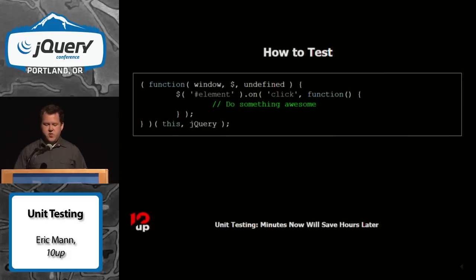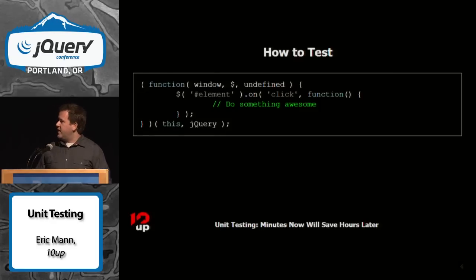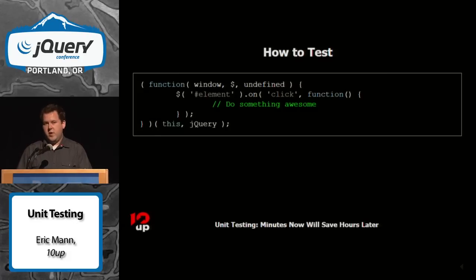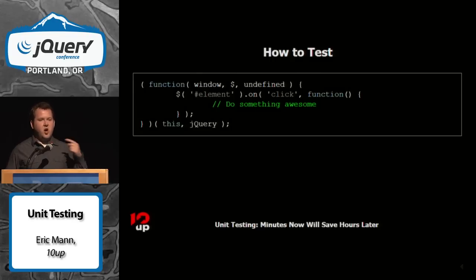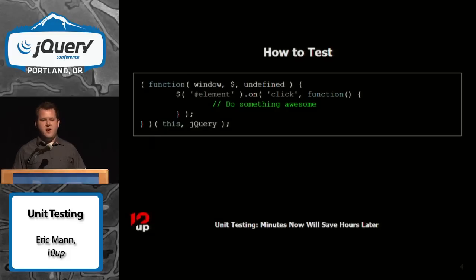Here's an example of how a lot of people write their jQuery code: everything wrapped inside a closure, exposing the window global object and passing jQuery in as the dollar sign, then binding a click handler with an anonymous function callback. There's nothing wrong with this code except for one very important thing: you can't test it. That anonymous function doesn't exist anywhere outside the click handler, let alone outside the closure.